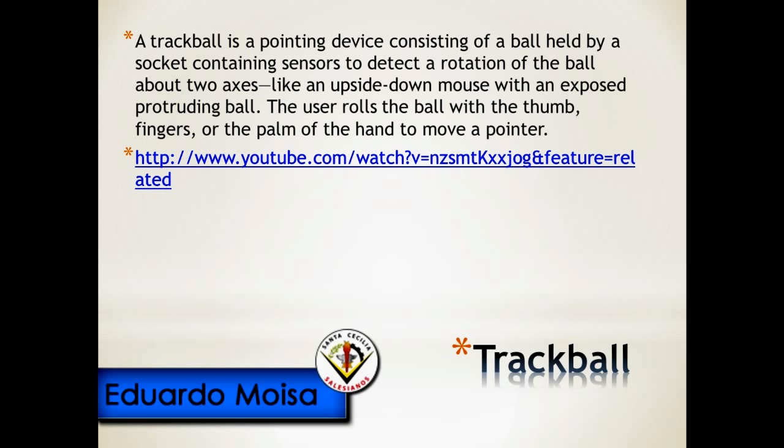A trackball is a pointing device consisting of a ball held by a socket containing sensors to detect the rotation of the ball about two axes — like an upside-down mouse with an exposed protruding ball. The user rolls the ball with the thumb, finger, or the palm of the hand to move a pointer on screen. Compared with the mouse, a trackball has no limits on effective travel.